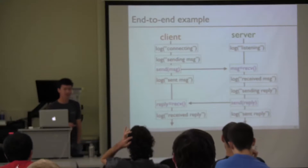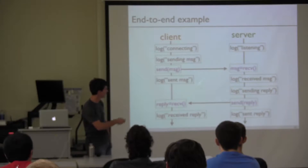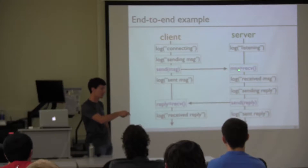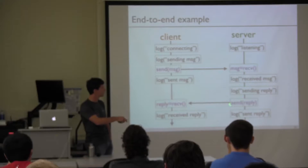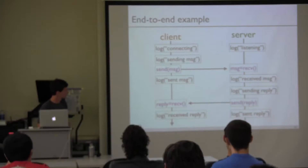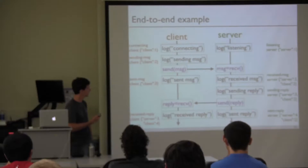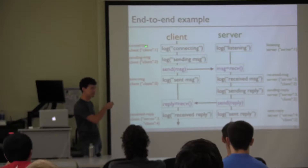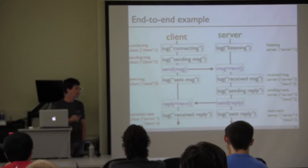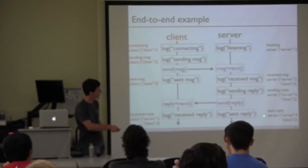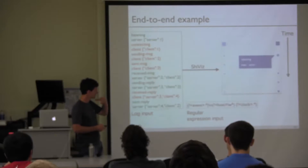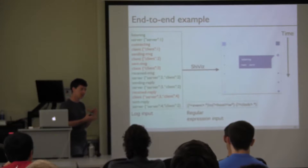Here's an end-to-end example of how you'd put these together. Here are two programs laid out in time — time still goes from top to bottom. You have a bunch of log statements and a little bit of communication where the client sends a message to the server and the server sends a reply back. Using the vector timestamp algorithm, you can now associate a vector timestamp with every one of these log statements. Your log for the first line — for example, 'connecting' — will now look like this: there's a bit of JSON that encodes the vector timestamp associated with that log line.